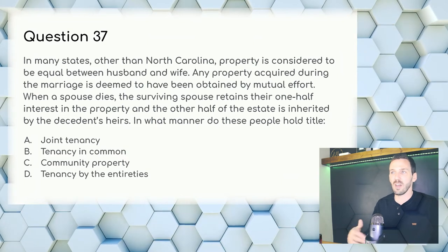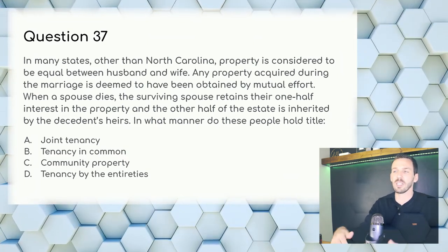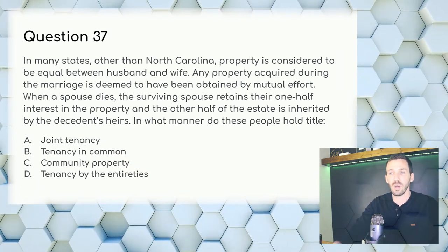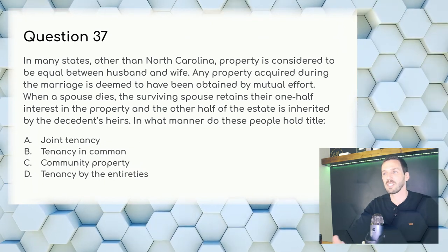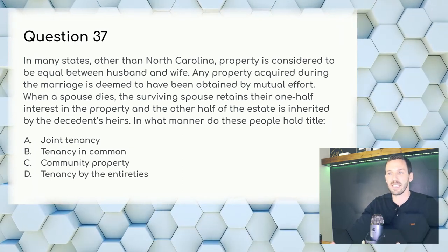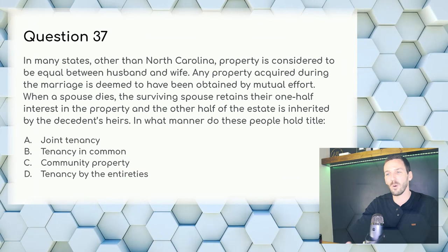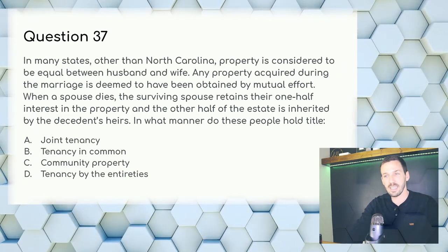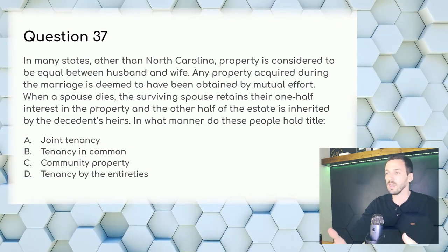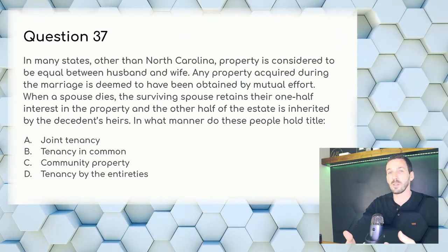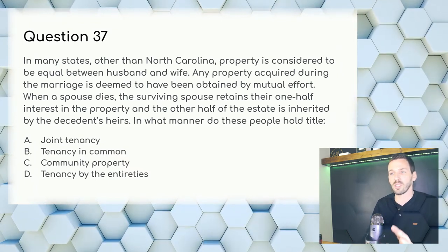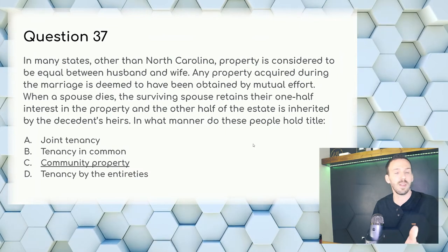Question 37: In many states other than North Carolina, property is considered equal between husband and wife — any property acquired during the marriage is deemed attained by mutual effort. When a spouse dies, the surviving spouse retains their one-half interest and the other half is inherited by descendants. In what manner do they hold title? Answer: C, community property.